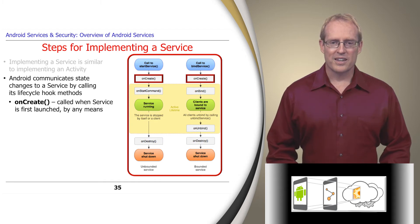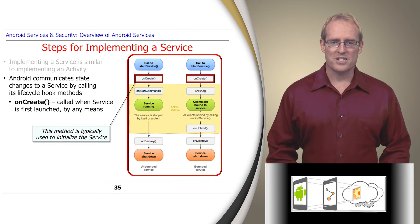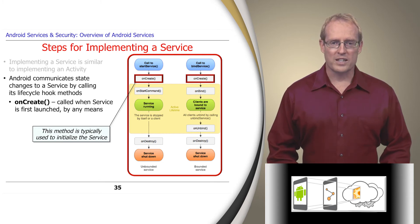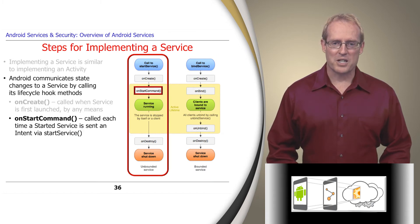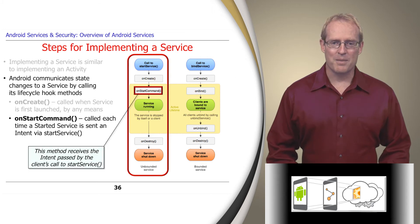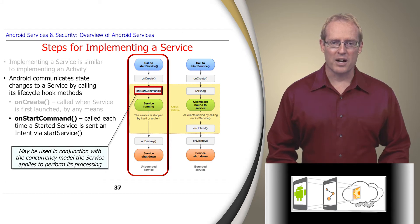Certain hook methods are common to both types of services. For example, the onCreate hook method is dispatched by Android's service framework when a service is first launched, and is typically used to initialize the service. The onStartCommand hook method is dispatched by Android's service framework every time the startService method is invoked to send an Intent command to a started service. It receives the Intent parameter passed to startService, which can be used in conjunction with the concurrency model the service applies to perform its processing.